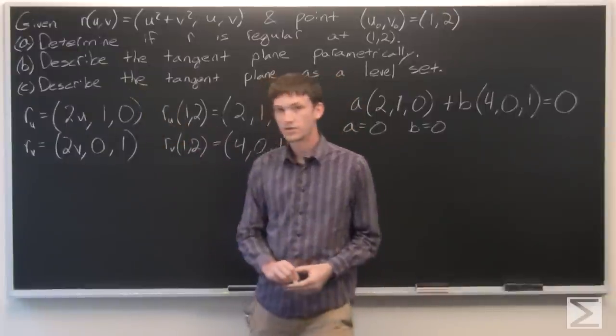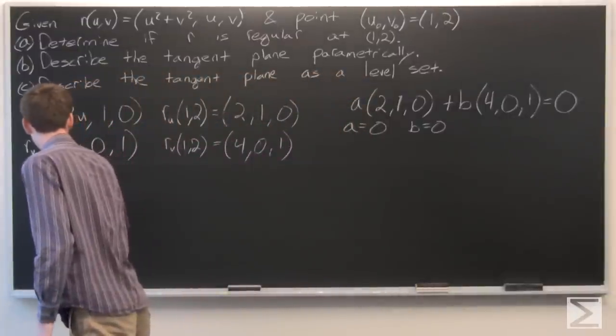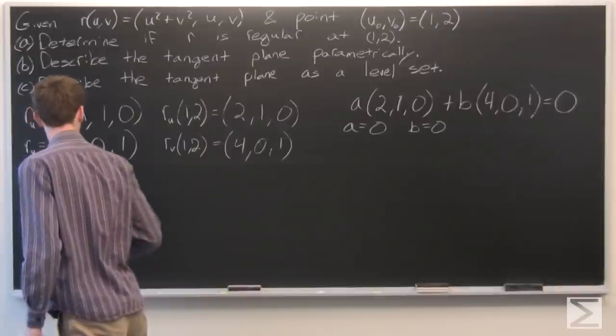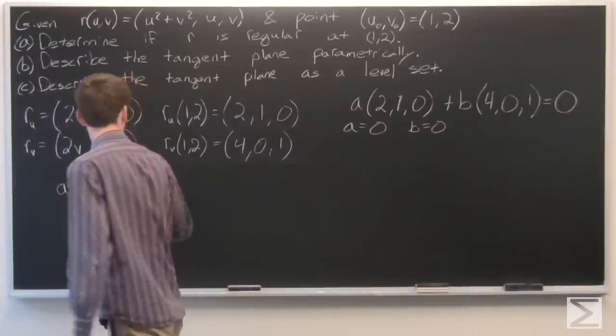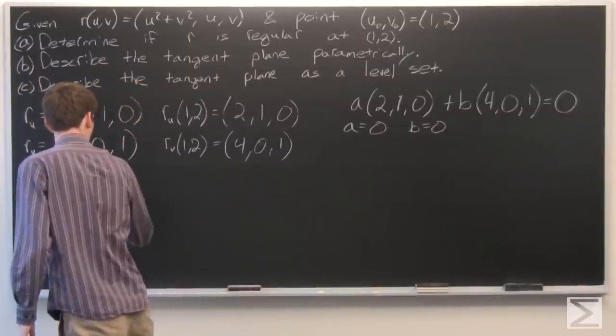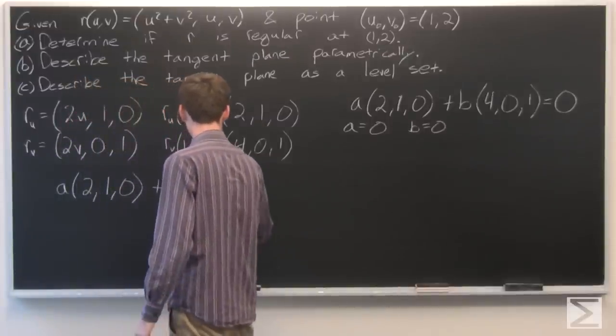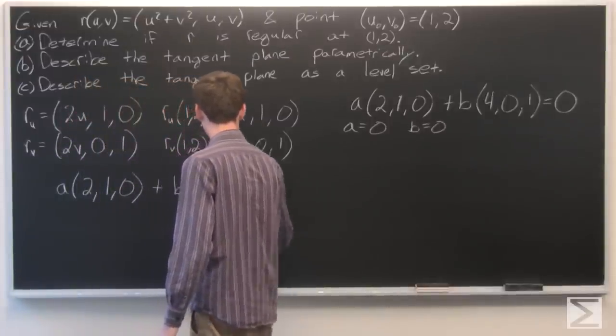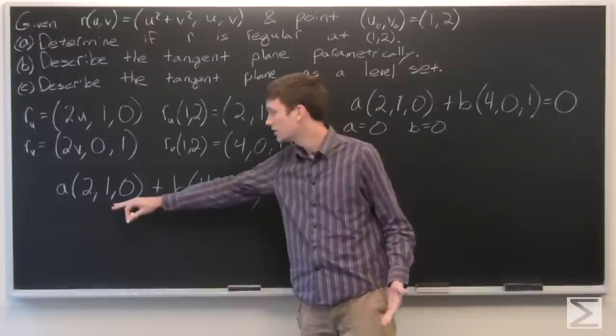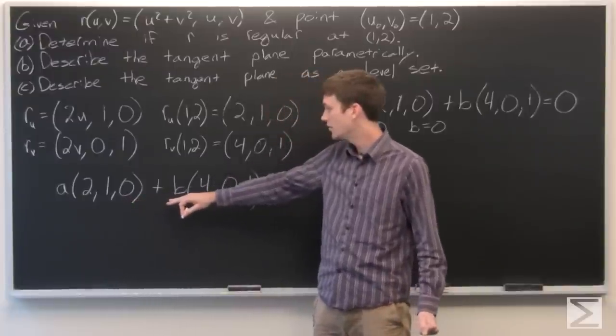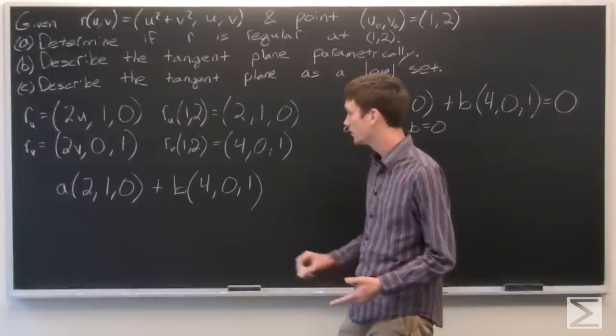And we can describe the tangent set in the following way. Or rather the tangent space we'll describe in the following way. Just as a linear combination of those two, a times the first times r sub u at 1, 0. And add that to b times r sub u at 1, 2.